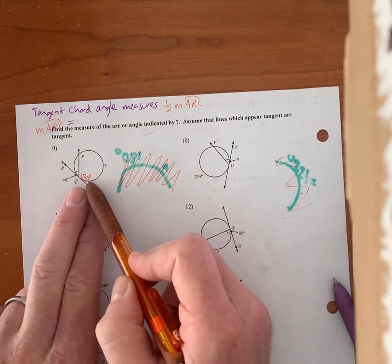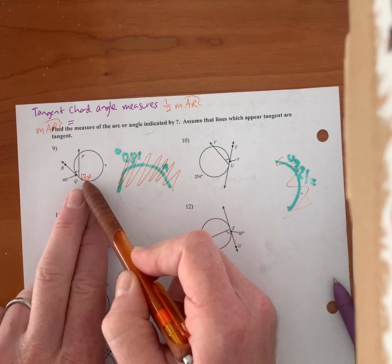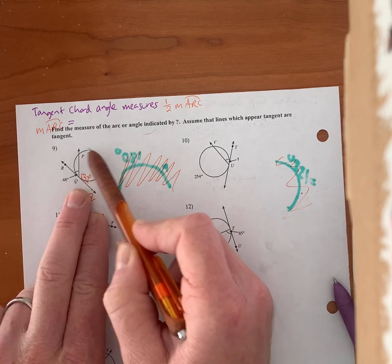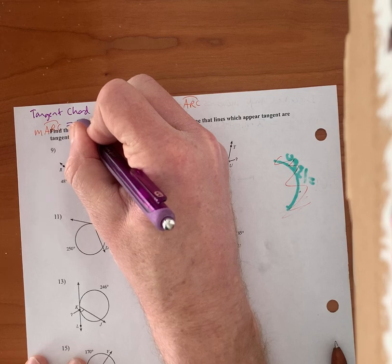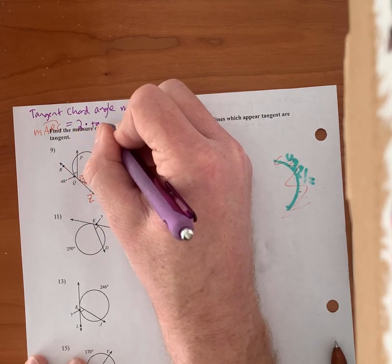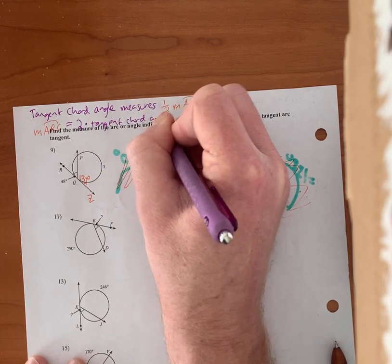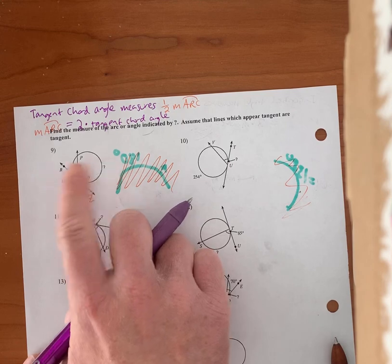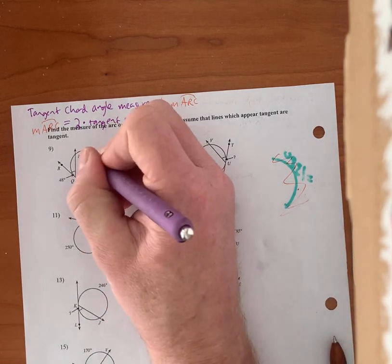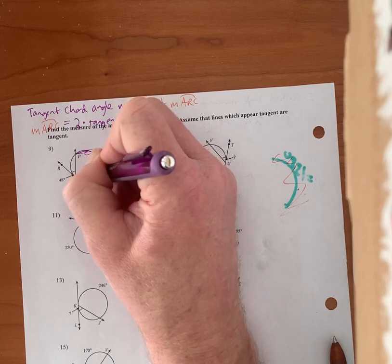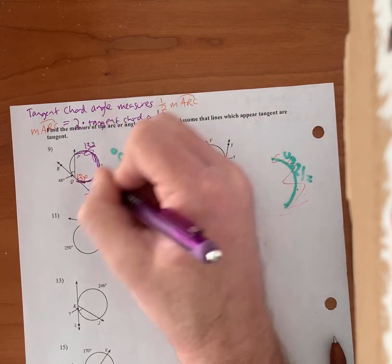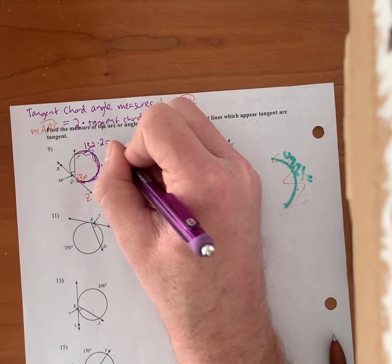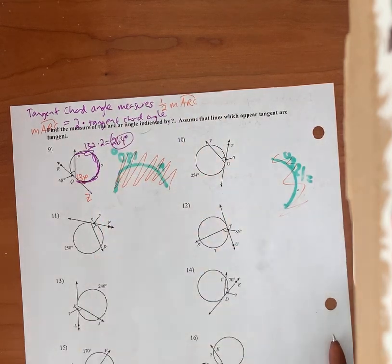My tangent chord angle is going to be one-half whatever this arc is. We know angle RQZ is a straight angle measuring 180, so 48 degrees is supplementary to angle PQZ. 180 minus 48 gives me 132 degrees for angle PQZ, which is also a tangent chord angle. The arc measures two times the tangent chord angle — so I get 264 degrees. This is more than a semicircle, so my answer should certainly be more than 180 degrees — that confirms I did this correctly.